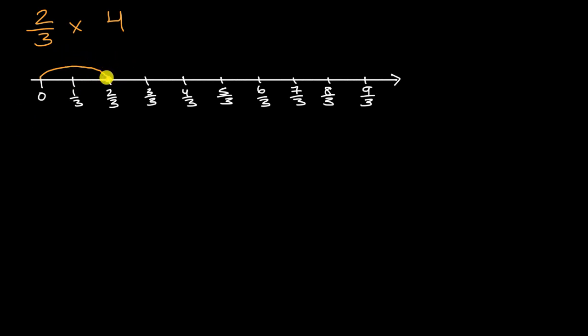If we multiply by two, or if we take two thirds times two, that'll be two jumps. So one two thirds, two two thirds, three two thirds, and then four two thirds.